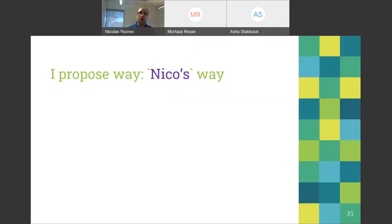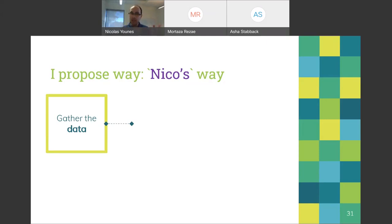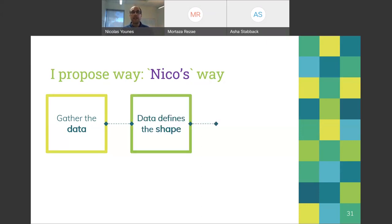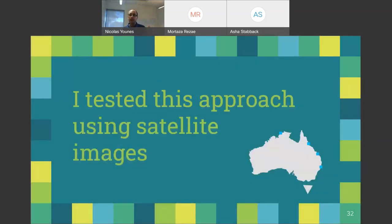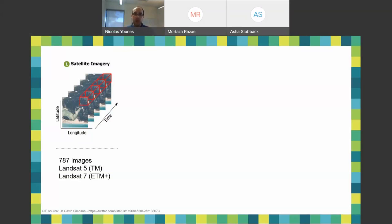Let me show you my way. First, we gathered all the satellite images. Then we let the data tell us what phenology looks like — we don't know what phenology looks like for every single pixel, so we let the data on every pixel determine that. We make no assumptions about the model. We tested this approach using satellite images from several locations: near Darwin, two sites in northern Queensland, a couple in southern Queensland, and one site in New South Wales.